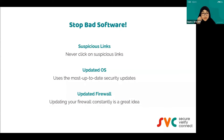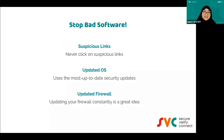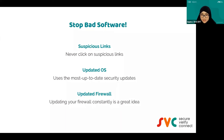How do you stop bad software? First, try not to click on suspicious links — especially through spam emails that try to trick you, like 'there's a sale, click this link.' You need to update your operating system, which uses the most up-to-date security updates. Don't forget to update your firewall as well — if you're on Windows, the firewall is often enabled automatically.